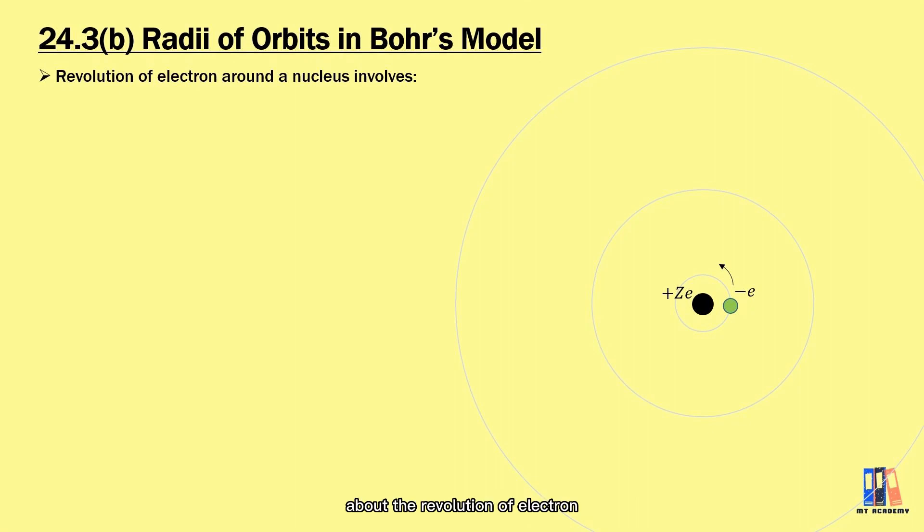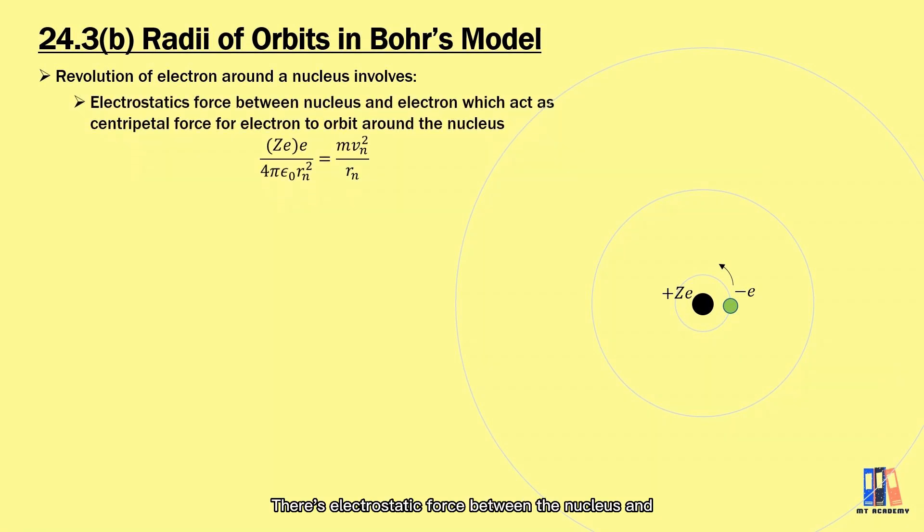The concept we are talking here is about the revolution of electron around a nucleus. There's electrostatic force between the nucleus and electron which acts as the centripetal force for the circular motion of electron around the nucleus. Quite similar to the gravitation concept we have learned in the first semester. So here we have the equation of Ze² over 4πε₀r² equal to mv²/r, where Ze is the charge of nucleus. It depends on which atom we are talking about, for example like the hydrogen atom which has one positive charge in its nucleus.